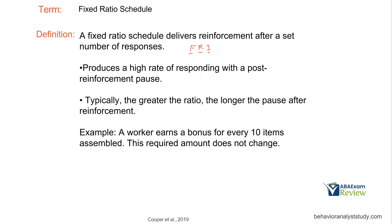A fixed ratio schedule produces a high rate of responding with a post-reinforcement pause, and the greater the ratio, the longer the pause after reinforcement. On an FR2 there's a slight pause after each reinforcement, but on an FR15 you've gone from two responses to fifteen — so after reinforcement you might pause longer, knowing that once you start again you've got to get back to fifteen. The larger the response effort required to produce reinforcement, the more significant that post-reinforcement pause.